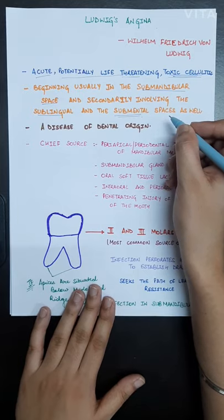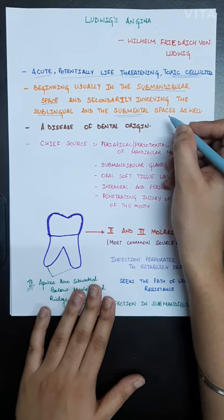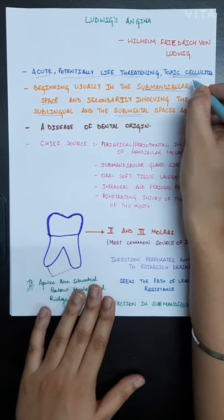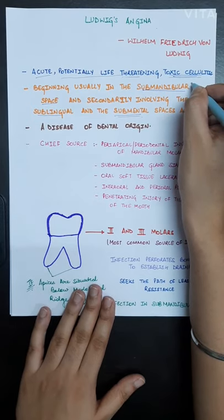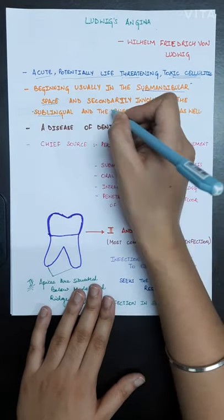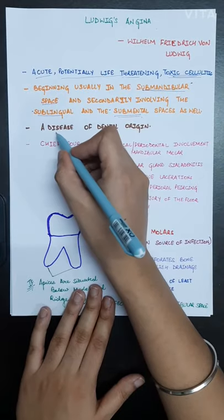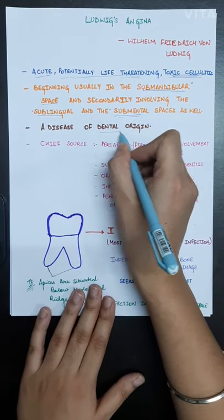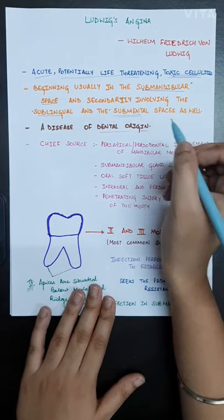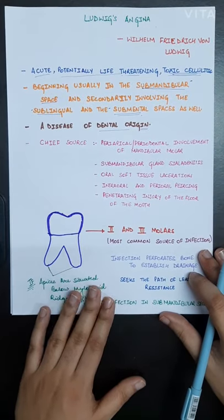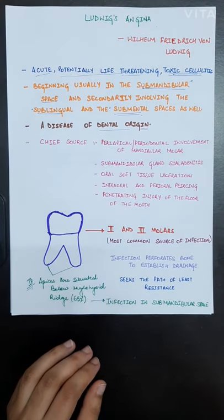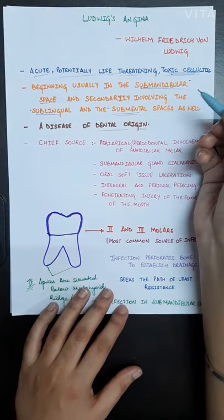We will call a cellulitis Ludwig's angina only when all three submandibular spaces are involved: the submandibular, the sublingual, and the submental. The disease is basically of dental origin, so all the infections that lead to Ludwig's angina are originated due to dental causes or disease of dental origin.